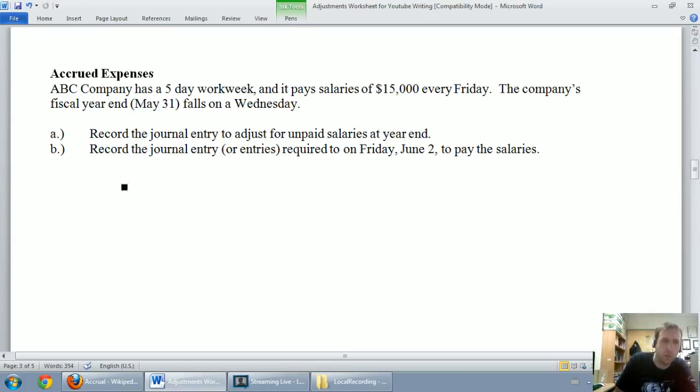The company's fiscal year-end falls on a Wednesday on May 31st. Record the journal entry to adjust for unpaid salaries at year-end. So we're going to do a journal entry on May 31st. We've got salaries - that's an expense, a cost that's built up over time but we haven't paid it yet. Our year-end is Wednesday, we're going to pay it on Friday, so that seems to fit the bill of an accrued expense.